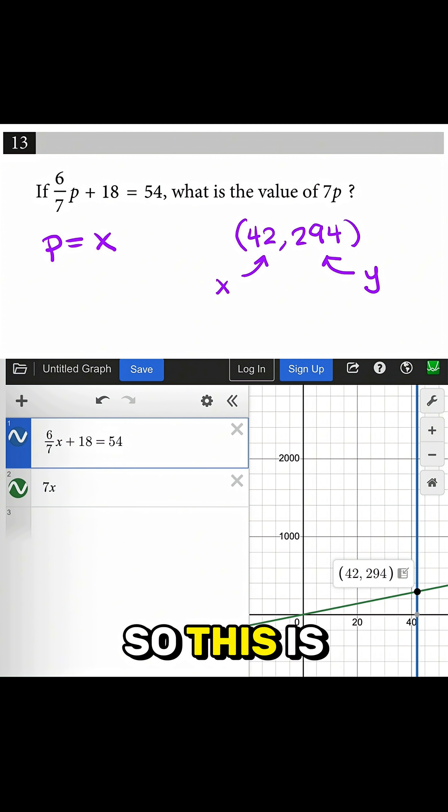So remember that p is x, so this is actually just p right here. They're asking you for the value of 7p, so please do not accidentally answer 42. The answer is 294.